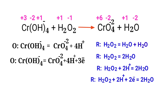Make electron gain equivalent to the electron loss — the electrons lost in the oxidation half reaction must equal the electrons gained in the reduction half reaction. The oxidation half reaction has 3 electrons and the reduction half reaction has 2 electrons. To equalize them, multiply the oxidation half reaction by a coefficient of 2 and the reduction half reaction by a coefficient of 3.